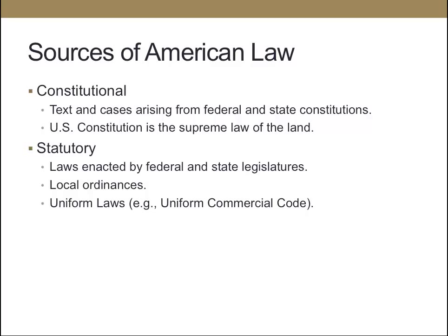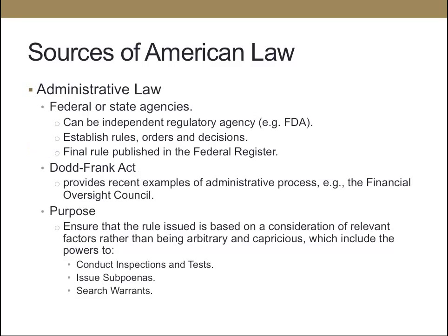The U.S. Constitution is the supreme law of the land. The next source of American law is statutory law — these are laws enacted by federal and state legislatures, and even down to the local level they're called ordinances. There have been attempts among states to create uniform laws, for example the Uniform Commercial Code or UCC, which governs the sale of goods.